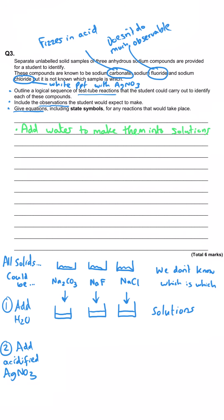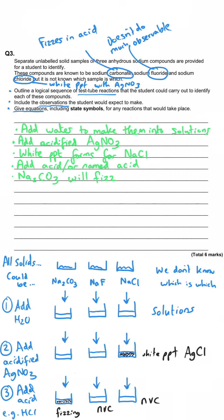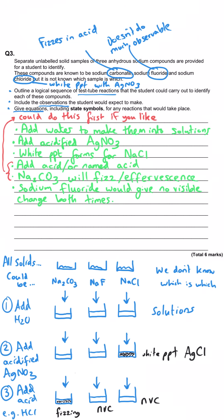First, add silver nitrate to all three solutions. Only sodium chloride reacts — the chloride ion gives a white precipitate of silver chloride. Then add acid to the remaining samples; sodium carbonate gives effervescence or fizzing due to the carbonate ion reacting to produce CO₂. The one that gives no visible change in either test is sodium fluoride. Note that acid could also be added directly to the solid samples and would still produce fizzing with sodium carbonate.